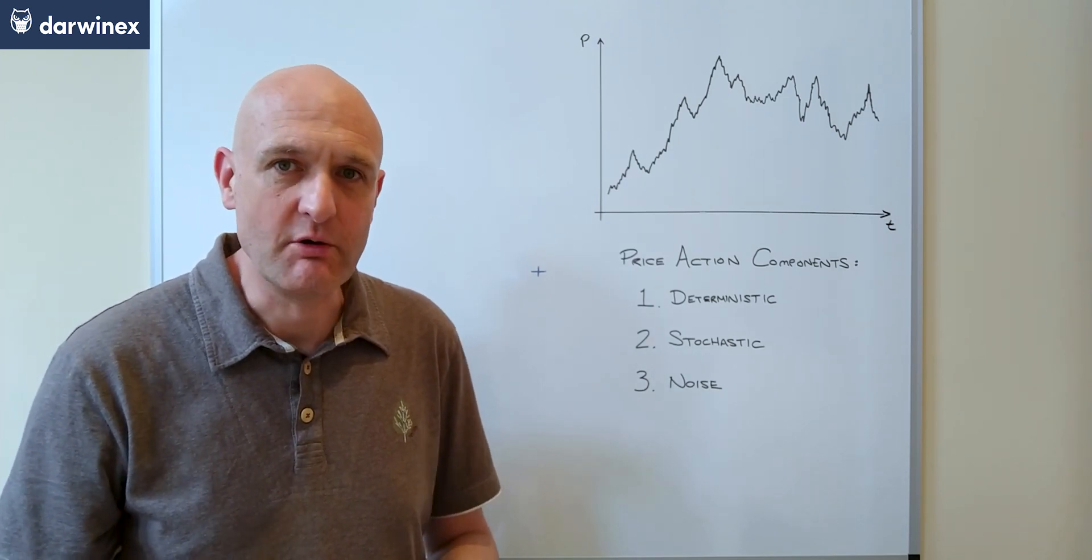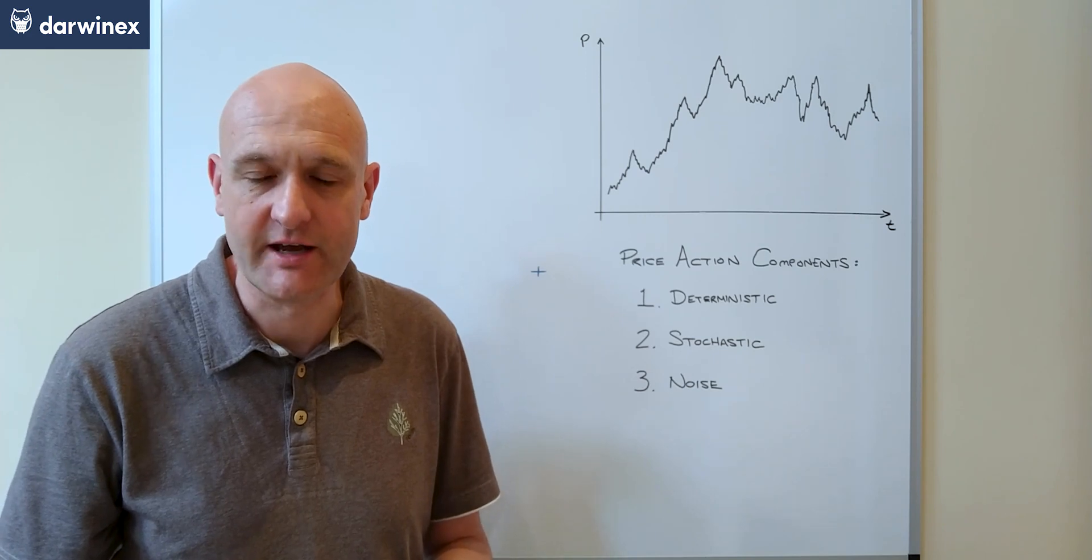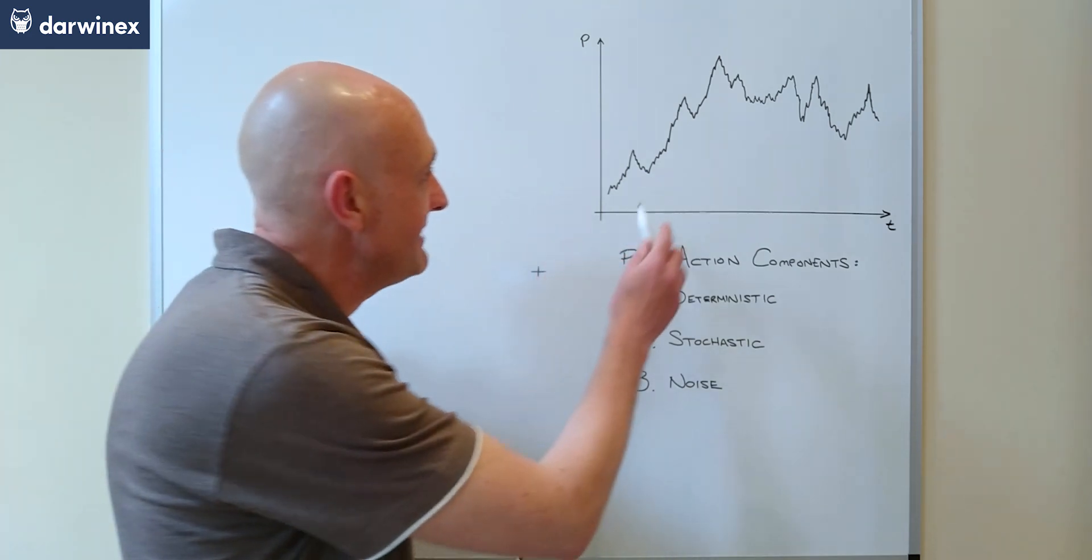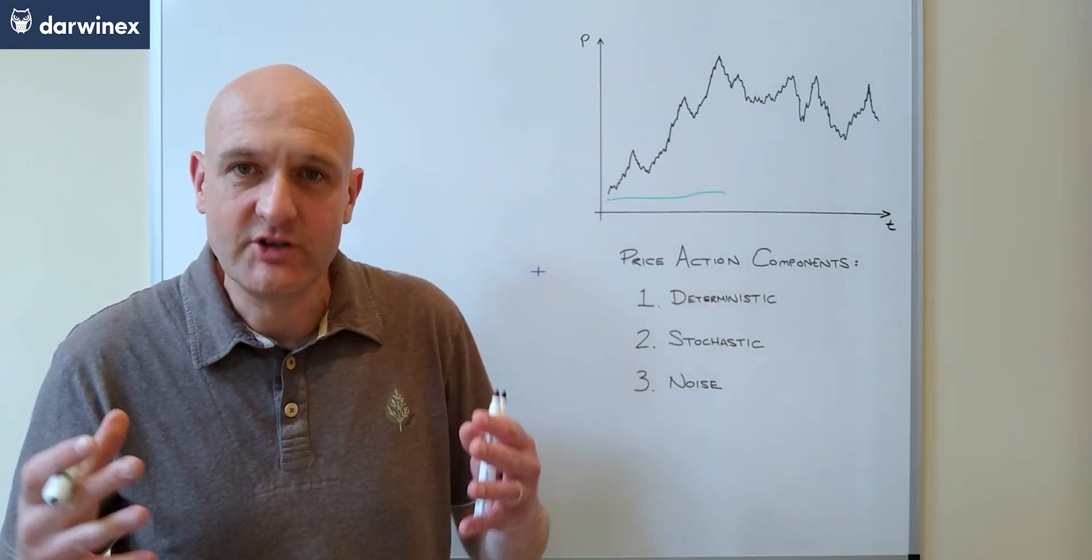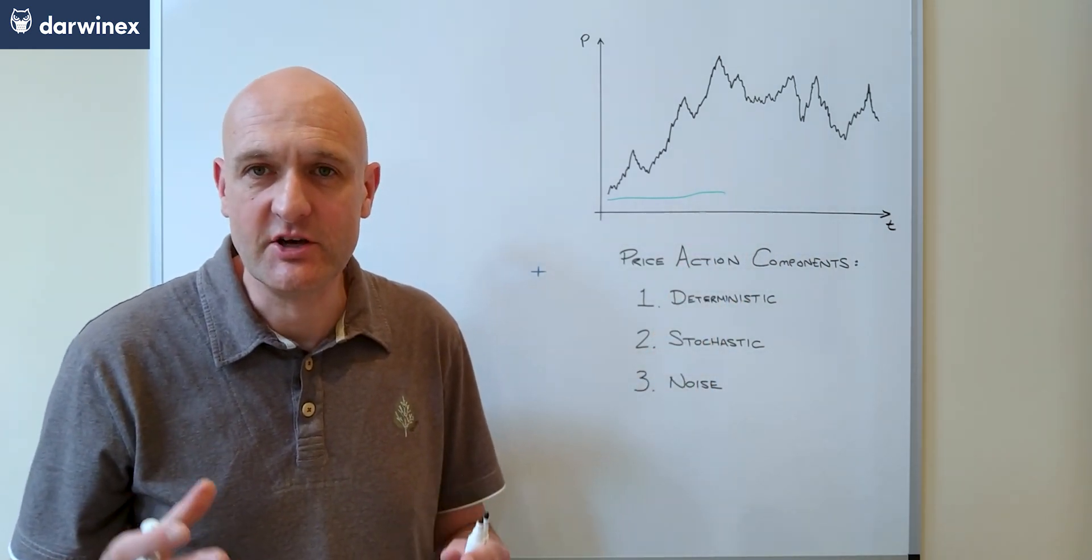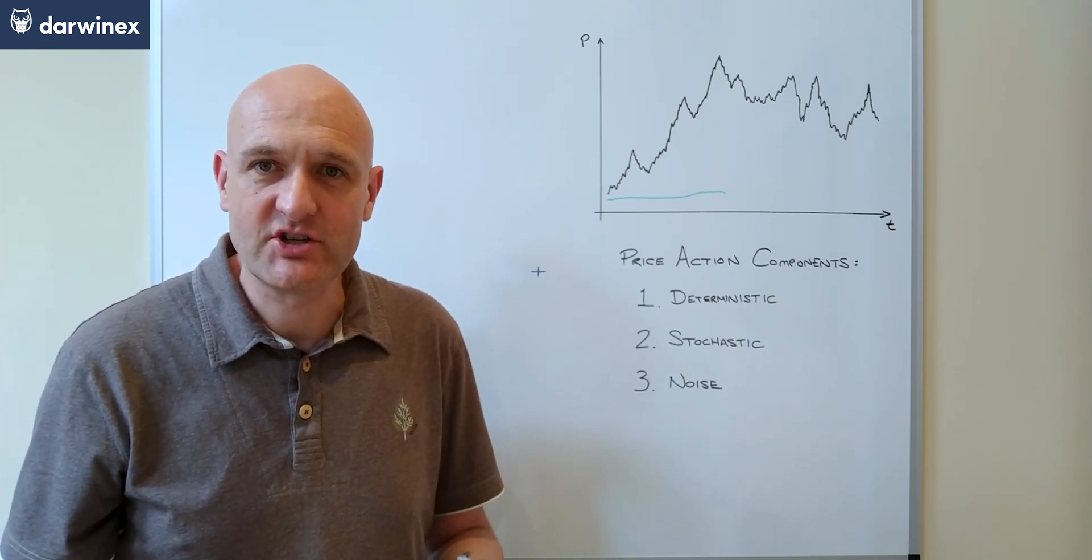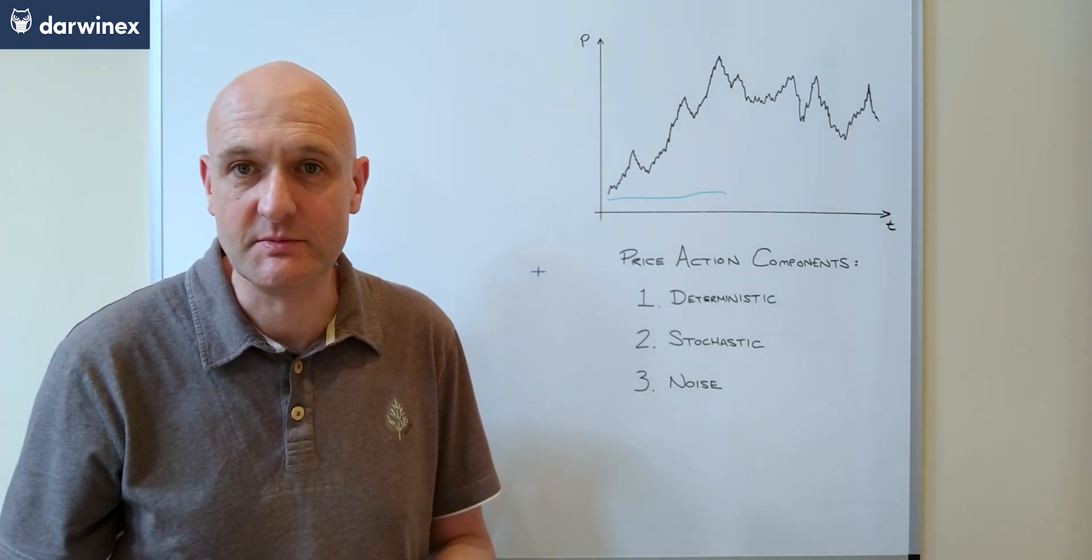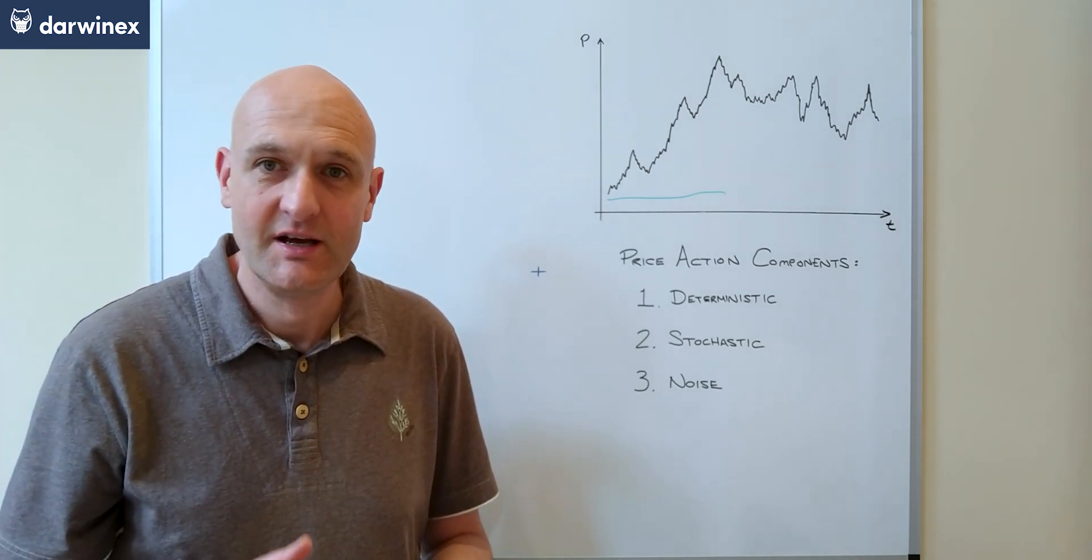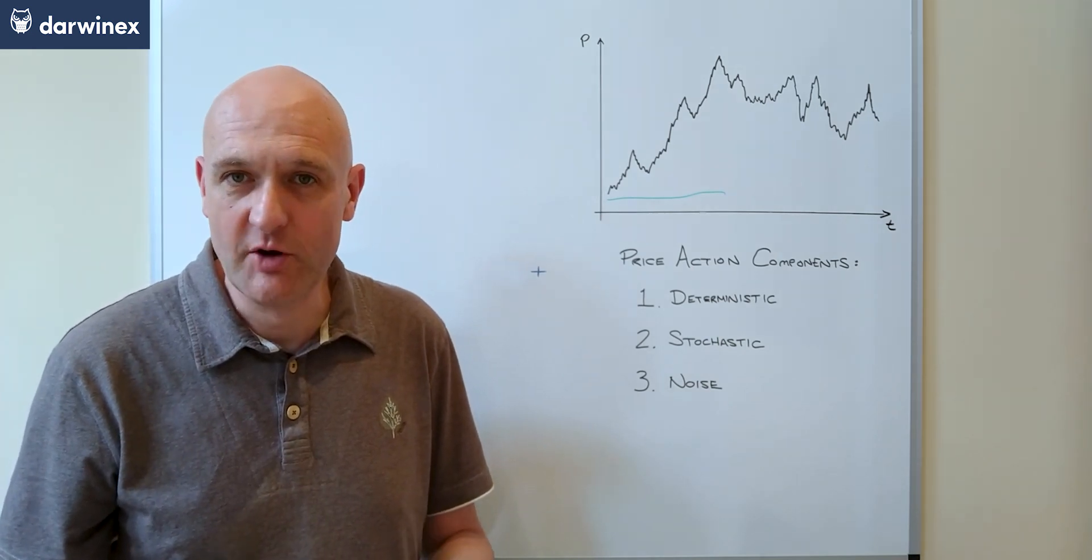But the ratio of individual influences of these components can change over time. So here, for example, on the left-hand side of the chart, we can see that the dominant component is the deterministic price movement. We can see the nice solid directional impulse waves, each followed by pullbacks and then further advancement with additional impulses, and the pattern repeats. The price action appears to have purpose, and it knows where it's going.